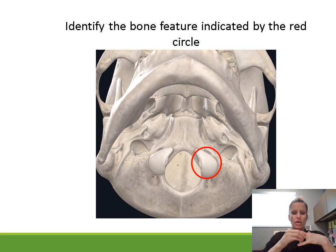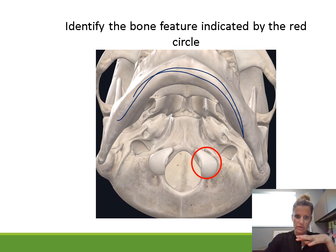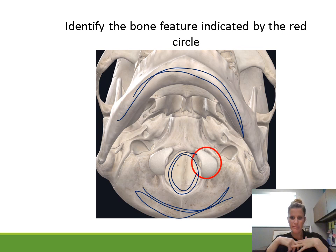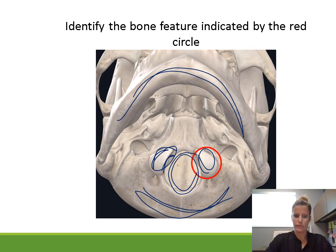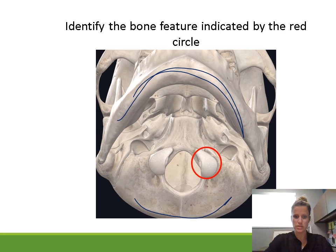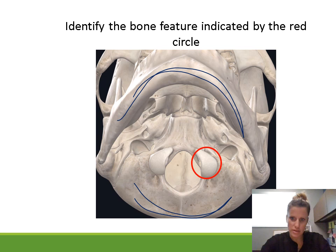Identify the bone feature. We're looking at the bottom of the skull. We already looked at the foramen magnum where the spinal cord meets the brainstem. This question is about the nice rounded processes on either side of the foramen magnum — those are part of the occipital bone, so they are the occipital condyles.